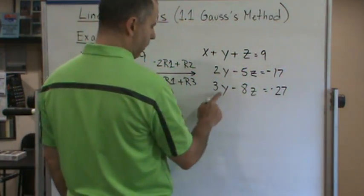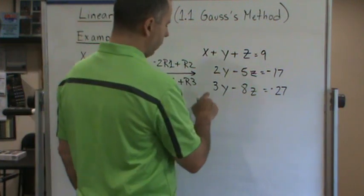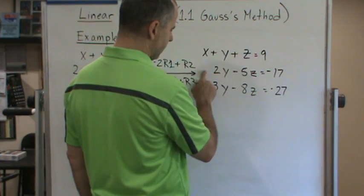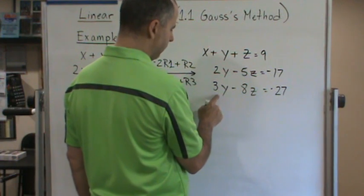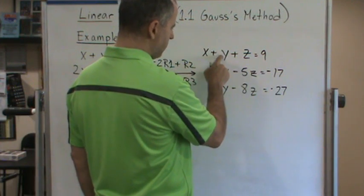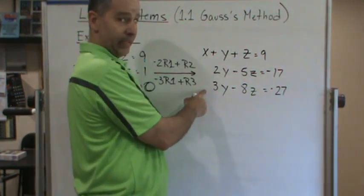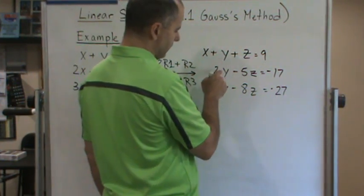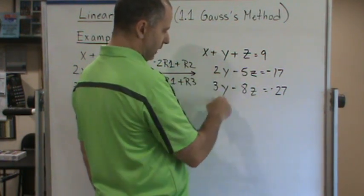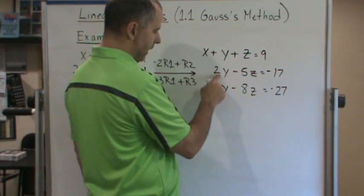Now we want to eliminate the 3y in row three. We need to use the second equation — not the first — because if we used the first equation we'd bring x back in, and we don't want that. So we'll use the second equation, which only has y and z, to eliminate the y. We need to figure out what to multiply by to produce a negative 3y.